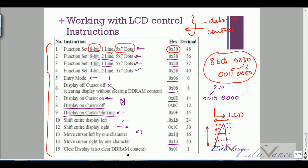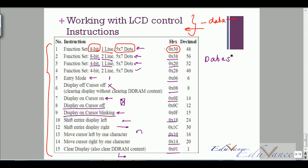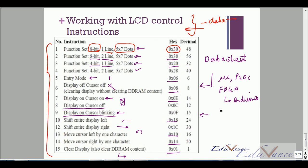To clear the display and the DDRAM memory, there is a specific command for that as well. All of these instructions can be looked up in the LCD datasheet. It is important to know these control instructions when working with an LCD using any microcontroller, PSoC, FPGA, or Arduino. I hope this lecture on the LCD display was clear — in the next lecture we will see how to use this LCD display with the platform we are looking at.